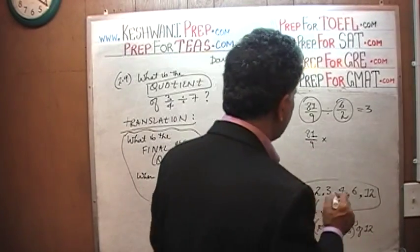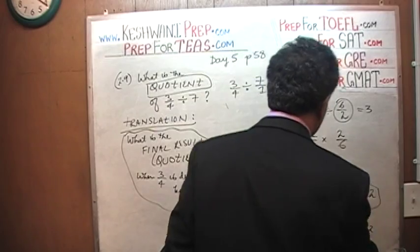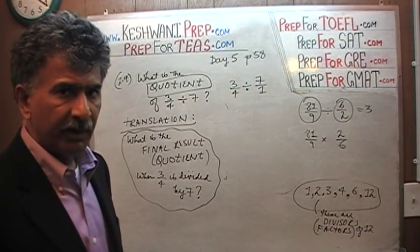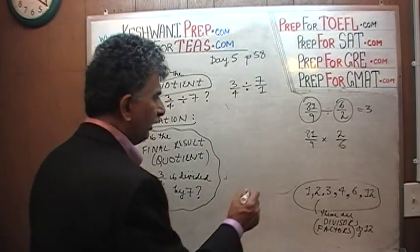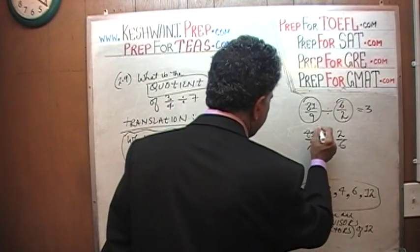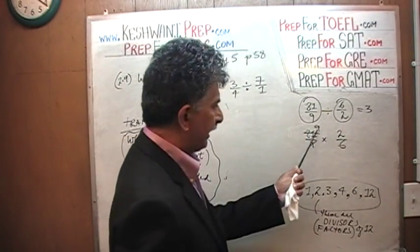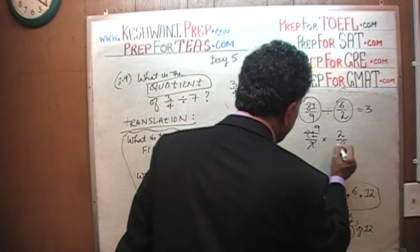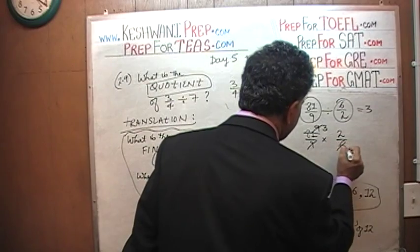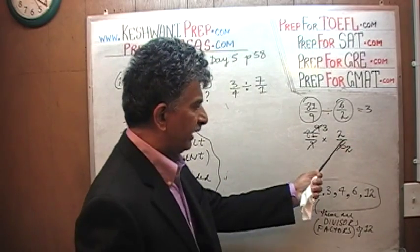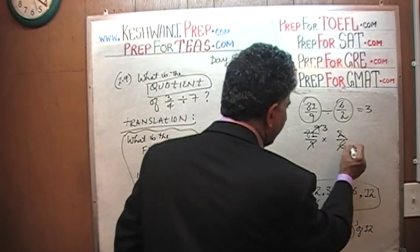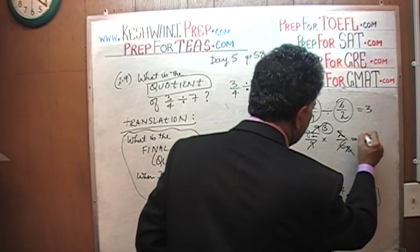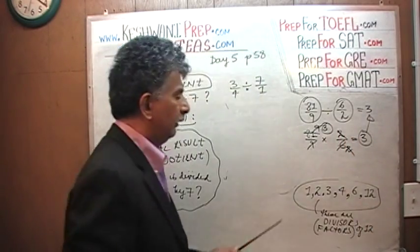If you find anything common between top and bottom, start reducing. First, 81 can be divided by 9 — we get 9 on top. Then we have 9 and 6: divide top and bottom by 3, so 9 becomes 3 and 6 becomes 2. Now divide top and bottom by 2 — the 2s cancel out and we are left with 3. Of course we knew the answer, but that is the process.